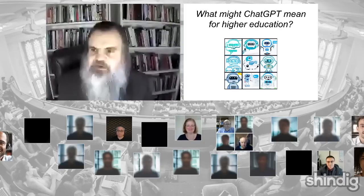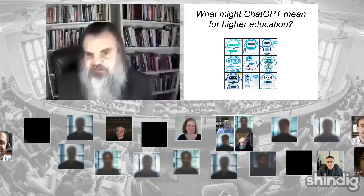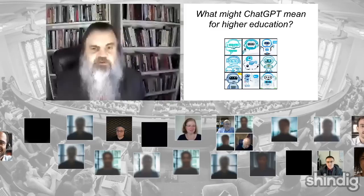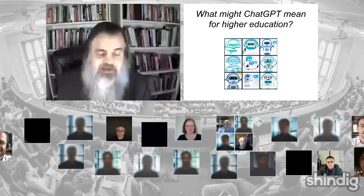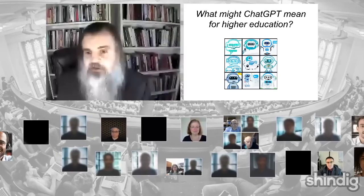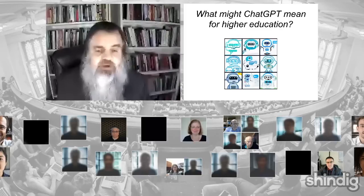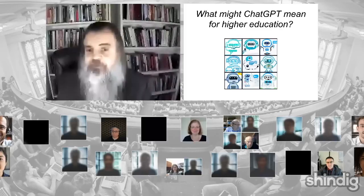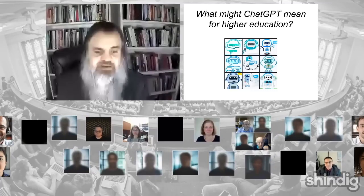ChatGPT was released about 10 days ago. This is the latest version of a text chatbot created by OpenAI. If you haven't used it, you can log in through various accounts and start asking the chatbot questions. What's powerful about ChatGPT is that it's able to draw on a greater library of text than ever before, and it seems to be more efficient and more convincing in creating text than any chatbot technology has been yet. This has triggered huge amounts of controversy — people decrying it as the end of all possible writing prompts in higher education, threatening jobs, and undoing writing as we know it.